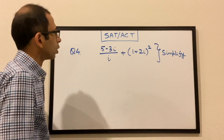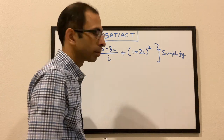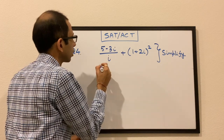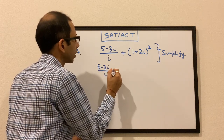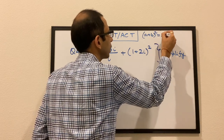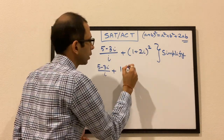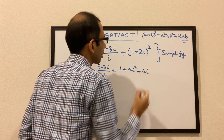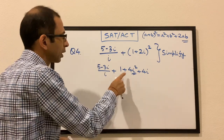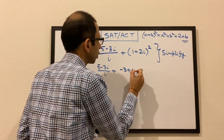Question 4: we have to simplify (5 − 3i) / i + (1 + 2i)². We start by expanding (1 + 2i)² using the (a + b)² = a² + 2ab + b² formula: 1 + 4i + 4i². Since i² = −1, 4i² = −4, giving 1 − 4 + 4i = −3 + 4i.